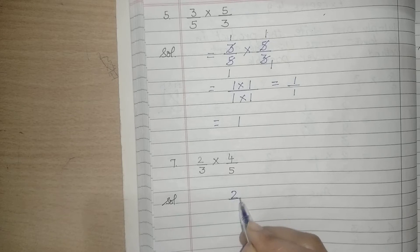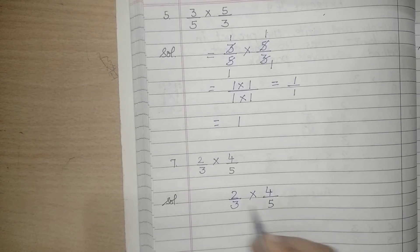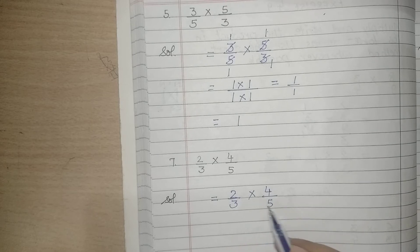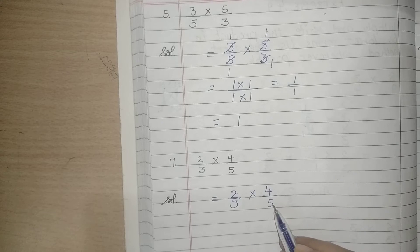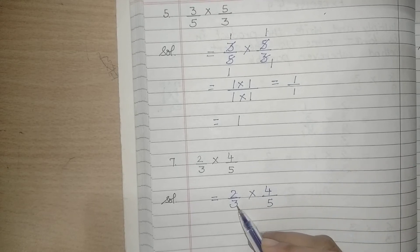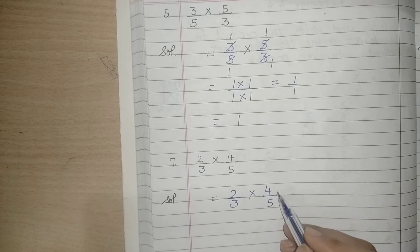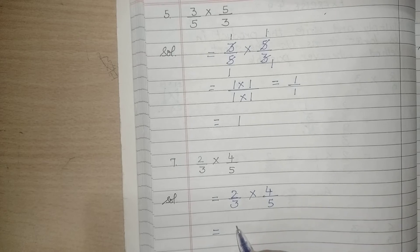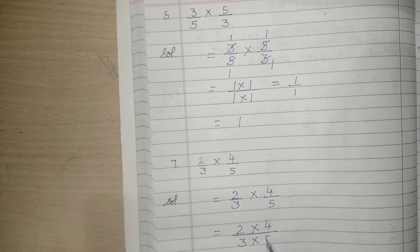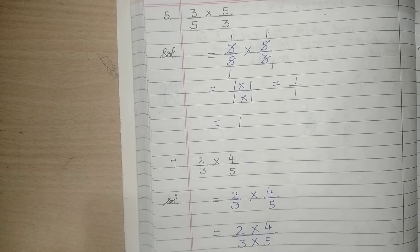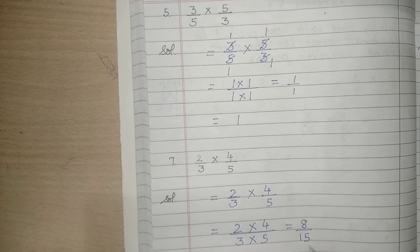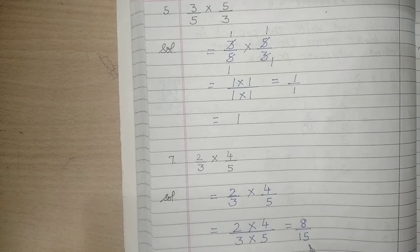Let's see the next part: 2 upon 3 multiplied by 4 upon 5. Here we check cancellation — 2 and 3 can't cancel, 2 and 5 can't cancel, 3 and 4 can't cancel. It means cancellation is not possible. So we simply multiply numerators: 2 fours are 8, and denominators: 3 fives are 15. So the answer is 8 upon 15.